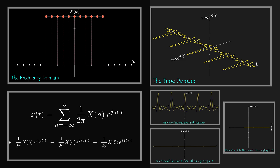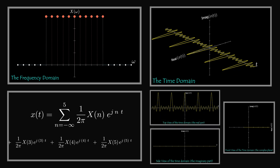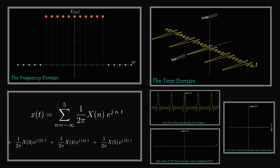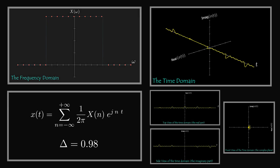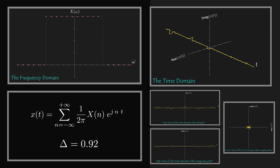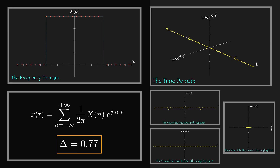It feels like this is the inverse of the Fourier series. Recall that the Fourier series gives us a discrete frequency domain from a periodic continuous time domain. At the end of this series of videos, I will discuss the relationship between all of these formulas. A discrete frequency domain is periodic in the time domain, with the period depending on the sample frequency — the larger the sample frequency, the smaller the time domain period.